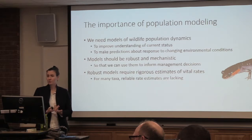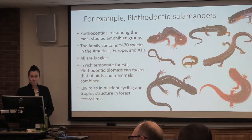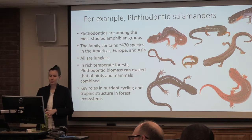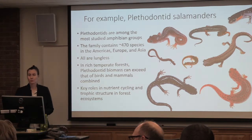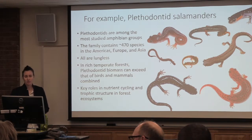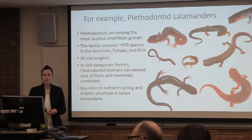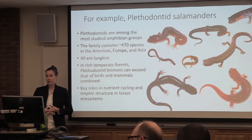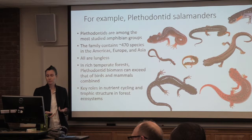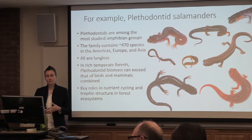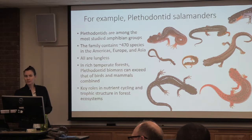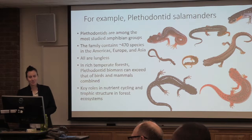But robust models require rigorous estimates of vital rates, and for many taxa these kinds of estimates are lacking. For example, Plethodon salamanders are a really diverse group — one of the most studied amphibian groups. The family contains about 470 species across the Americas, Europe, and Asia. All of them are lungless, so they rely on cool moist conditions to facilitate gas exchange across the surface of their skin, which really makes you think twice about picking them up — it's sort of like someone petting your lungs.